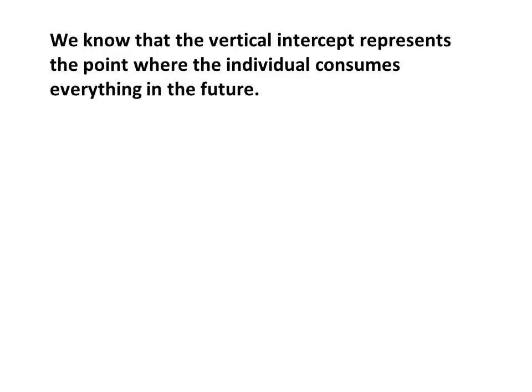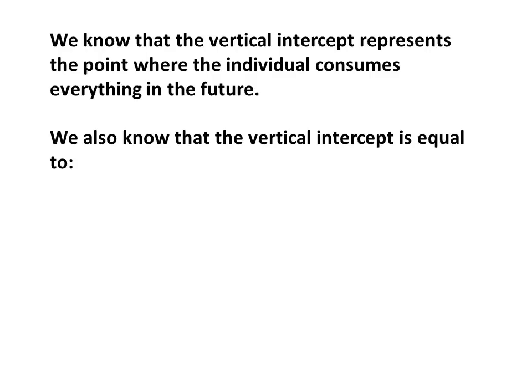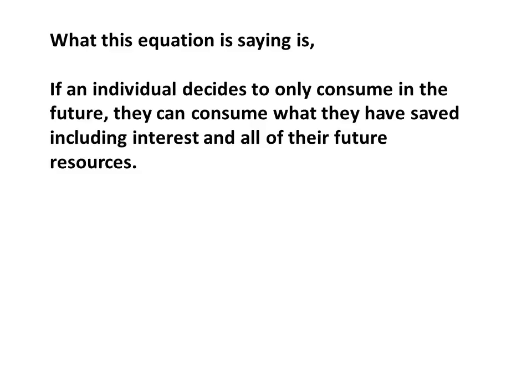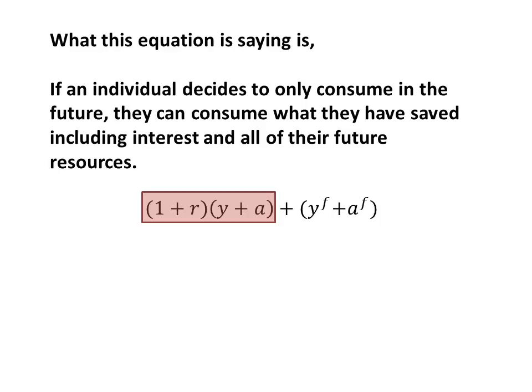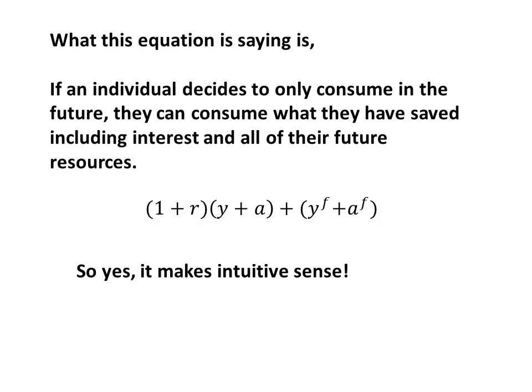But do these points make intuitive sense? We know that the vertical intercept represents the point where the individual consumes everything in the future. The vertical intercept is equal to (1+R)(Y+A) plus future income and future wealth. What this equation is saying is that if an individual decides to only consume in the future, they are able to consume what they have saved including interest, and all of their future resources. This makes complete intuitive sense — they get their current resources Y plus A multiplied by (1+R), so they get all that plus the interest, and they also get their future resources YF and AF.